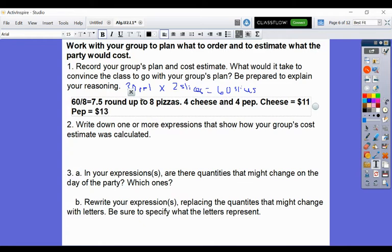Now if we continue writing down more of these expressions. Write down the expressions. So 30 times 2 equals 60 divided by 8 equals approximately 7.5. And then we could say with those four pepperoni and four cheese, we could do $11 times four cheese plus $13 for four pepperoni. And that will get us our answer of $96.